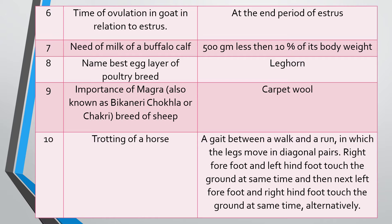Question eight: Name the best egg layer breed of poultry. It is a very important and well-known question. Answer: Leghorn. It is the best egg layer breed.